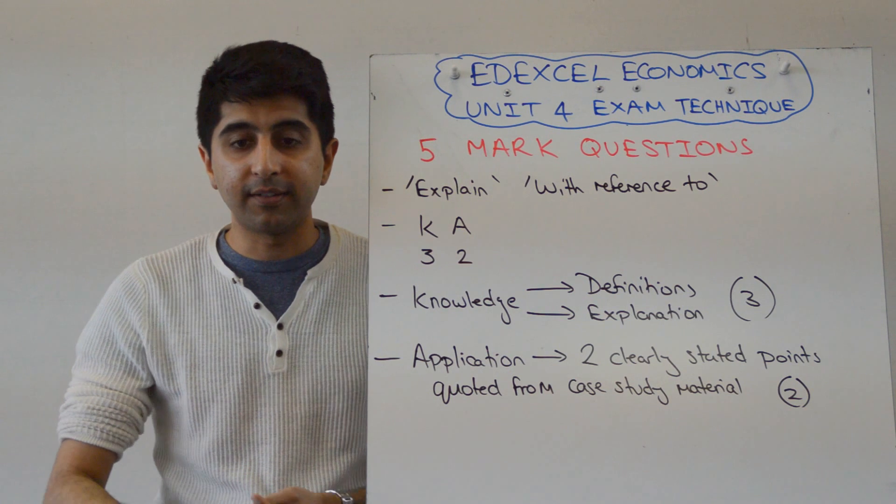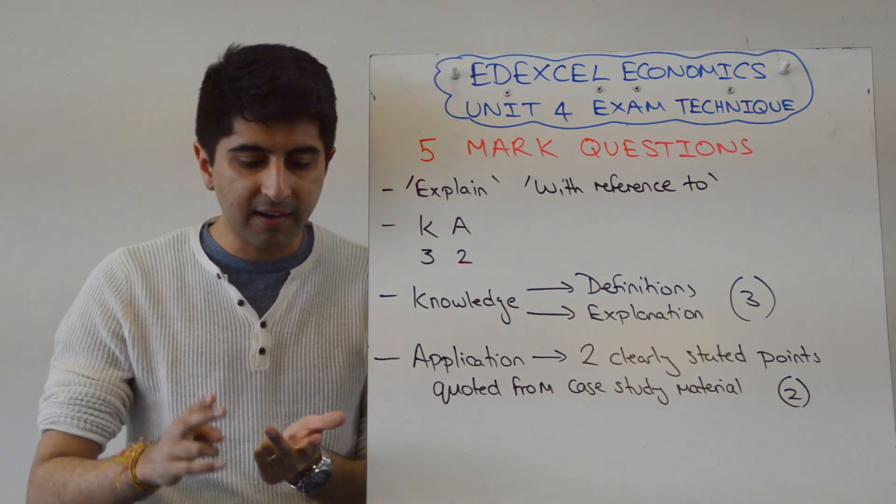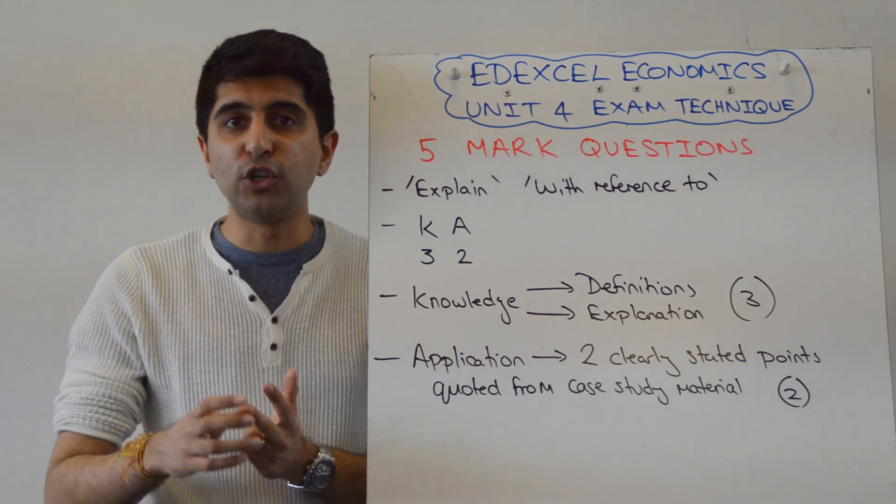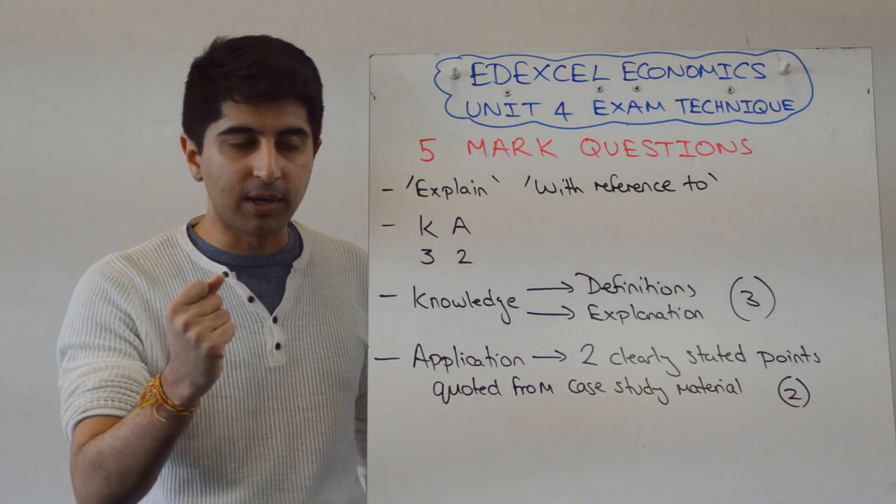How do you get your three knowledge marks? Definitions—banker. Always define when you get marks for that. Anything in the definition you need to explain, explain. So those two together, you'll get your three marks.